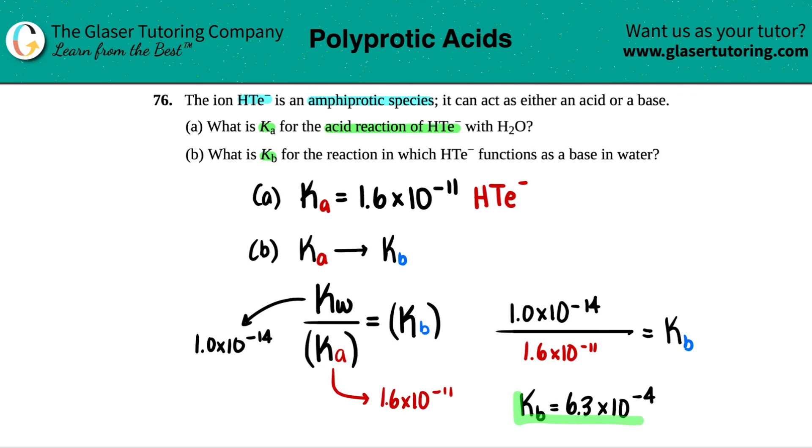And if we just compare the two of them, since the KB value is much greater, 10 to the negative 4th, to the Ka value, which is 10 to the negative 11th, that means that HTE- is more likely to act as a base than as an acid. And that's all that I got for you guys here.